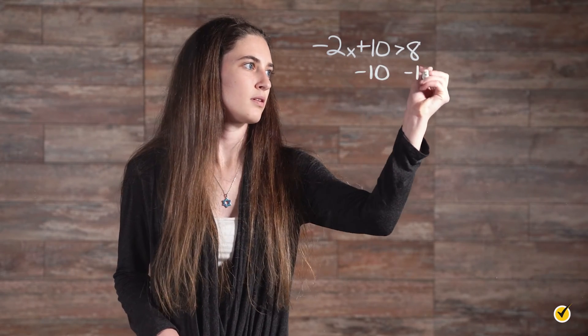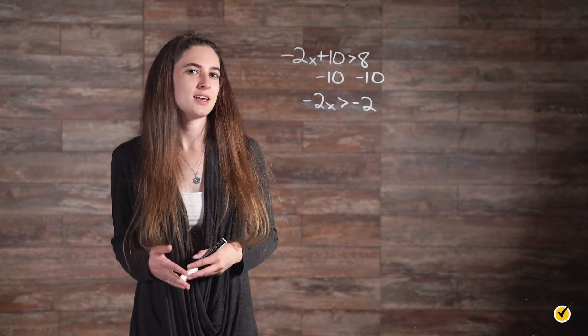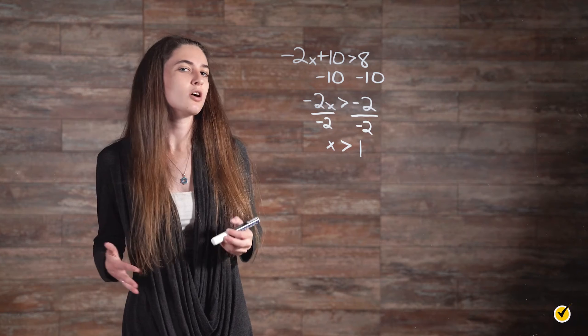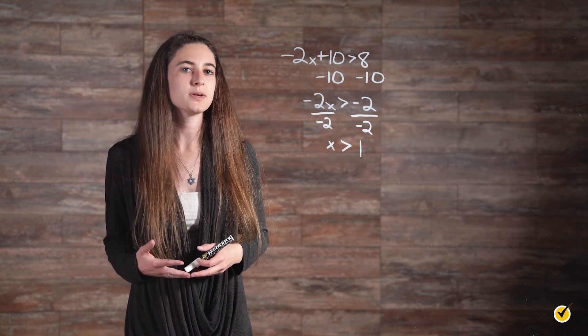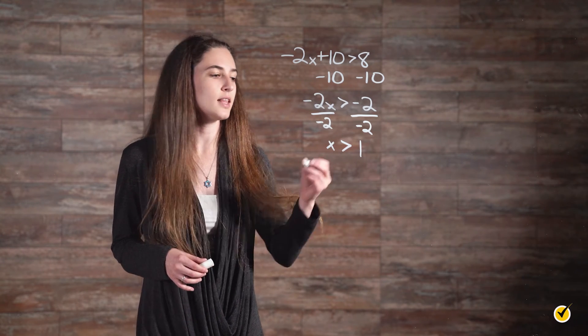There is one additional rule to keep in mind when solving inequalities. Whenever an inequality is multiplied or divided by a negative number, the inequality sign needs to be reversed. For example, solving negative 2x plus 10 is greater than 8: subtract 10 from both sides to get negative 2x is greater than negative 2. Dividing both sides by negative 2, we would normally get x is greater than 1, but we reverse the inequality sign, giving us x is less than 1.